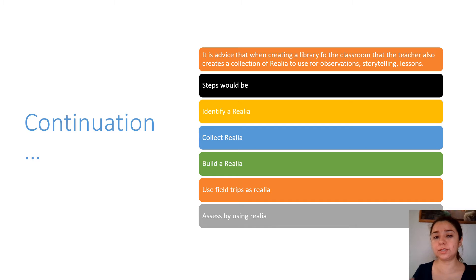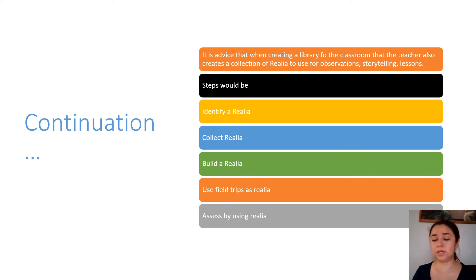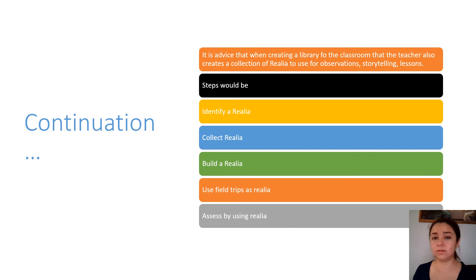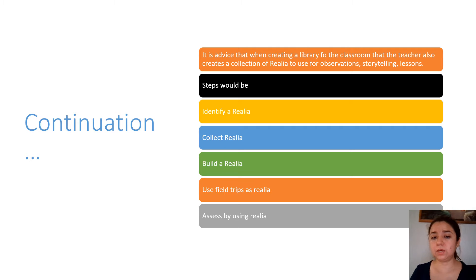These are the steps from the chapter. First, identify realia — that means going to a garage sale and finding fake food. You can get it for 10 or 20 cents, bring it home, and put it in your collection box. The next step is collecting realia for your class, and the third step is to build the realia library.